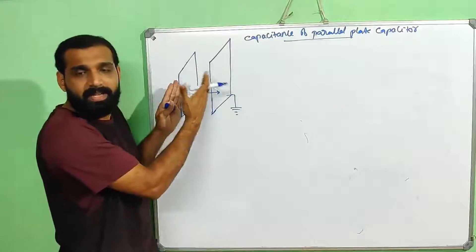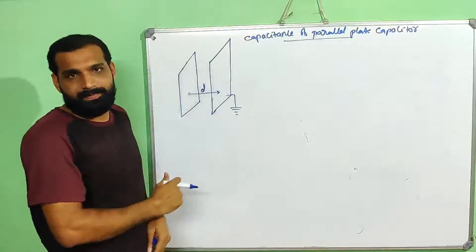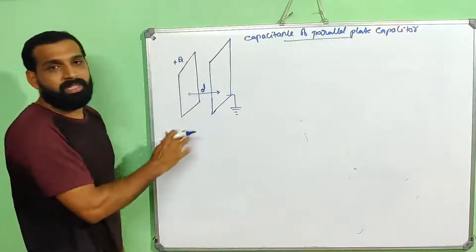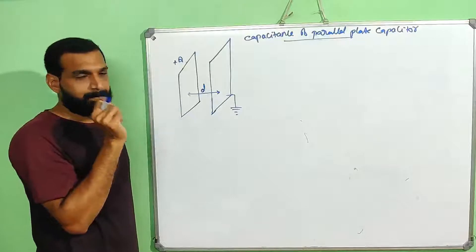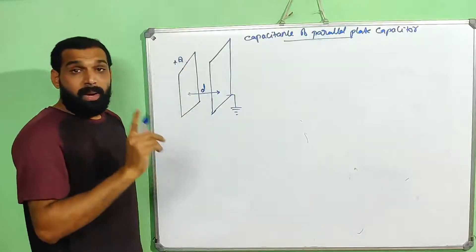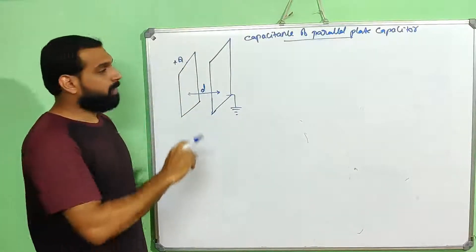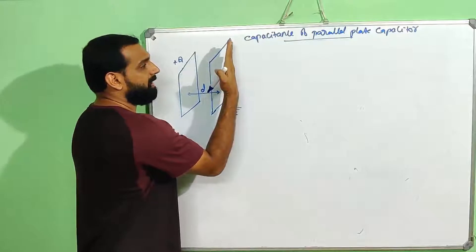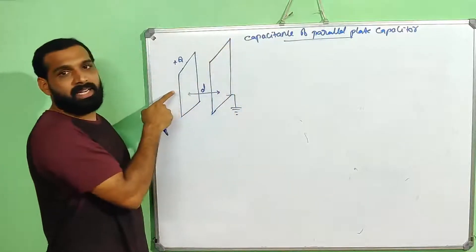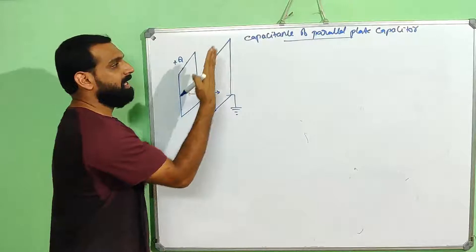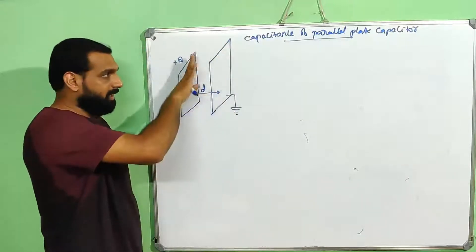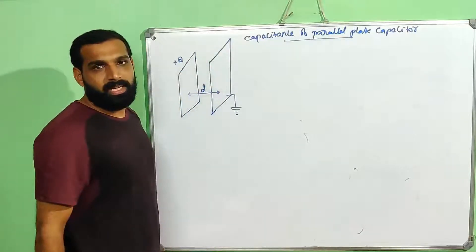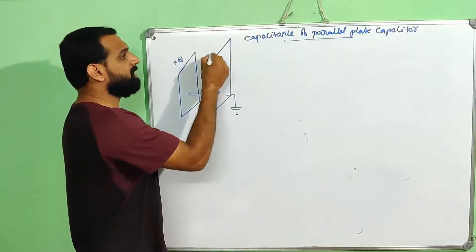These are two parallel conducting sheets. We place a plus Q charge on one plate. A conducting plate placed near a charged particle — this conducting plate on the left side is front-facing the charge. Negative charge is induced on that side, so minus Q charge is induced on the left and plus Q is induced on the right side.